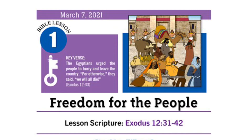Our lesson scripture is coming from Exodus chapter 12 verses 31 through 42. Does anyone know in which testament the book of Exodus is found? If you said Old Testament, that is correct. Exodus is one of the first five books in the Old Testament. The first five books are Genesis, Exodus, Leviticus, Numbers, and Deuteronomy. These are known as the books of law. Let's read our key verse: 'The Egyptian urged the people to hurry and leave the country, for otherwise they said we will all die.' Exodus chapter 12 verse 33.